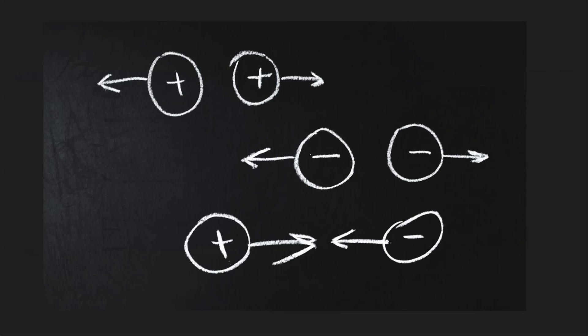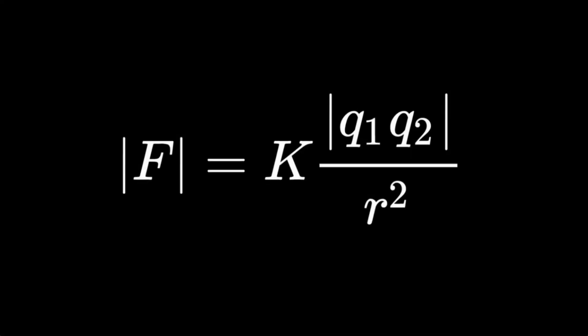And when dealing with individual point charges, it's easy to quantify the forces that attract and repel by using Coulomb's law, which states that the force between point charges is equal to a constant k times the product of the two charges divided by the square of the distance between them.